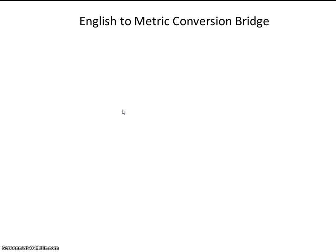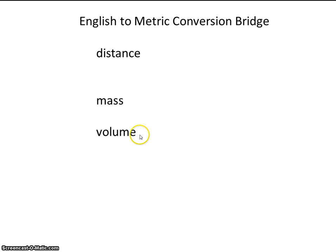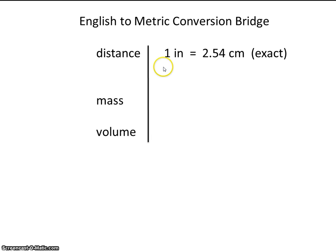Here are some conversion bridges which you'll probably want to memorize — these will be very helpful. We're going to have a conversion or two for distance, one for mass, and one for volume. You don't have to memorize dozens of conversions; the three or four I'm going to give you here will be enough. These bridges are a way for us to go from the English system to the metric system.